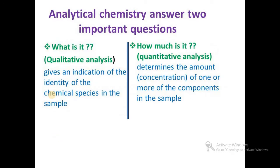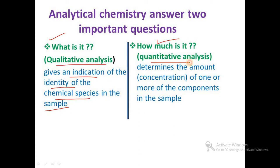Analytical chemistry answers two important questions: what is present, and how much is it? 'What' refers to which type of elements a compound contains — this is qualitative analysis, which gives an indication of the identity of the chemical species in the sample. Quantitative analysis determines the exact amount — that is, the weight or concentration of one or more components in the sample.